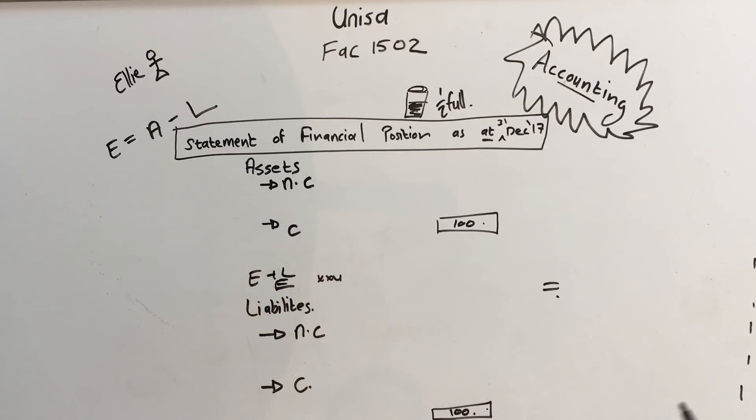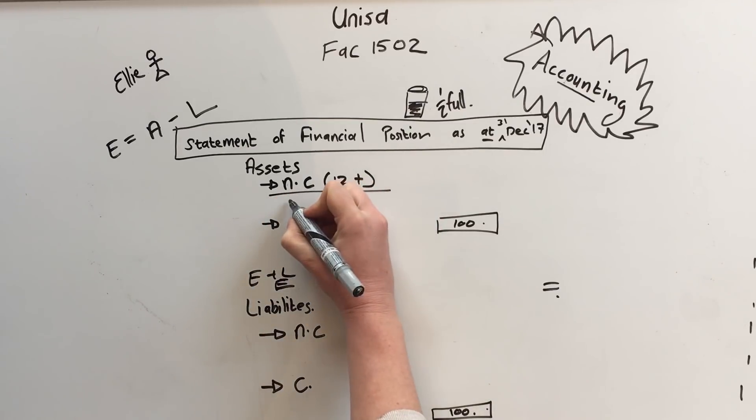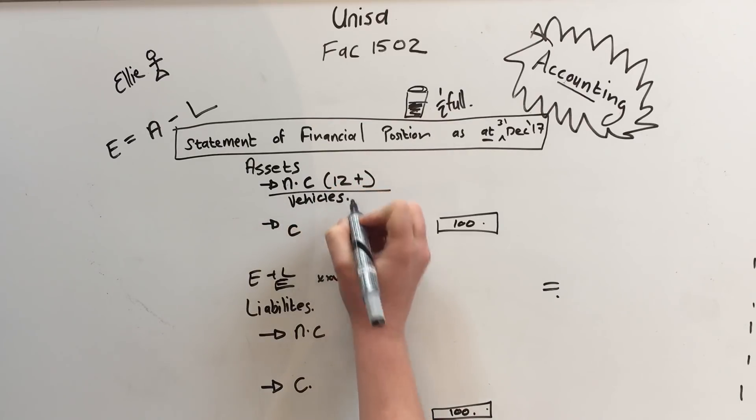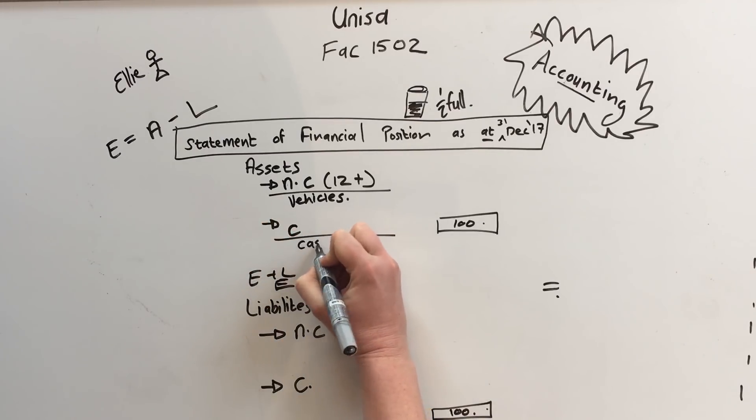In the previous example we spoke about the pizza shop that has a scooter. Now a scooter is an asset which we will use to make money and the scooter we are planning to have for 12 months plus. So it's a long-term business thing so it's non-current and we'll probably put it under vehicles. The current assets is short-term assets we have for example cash.